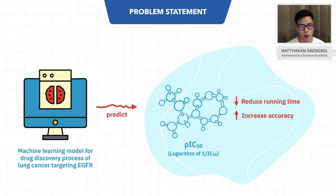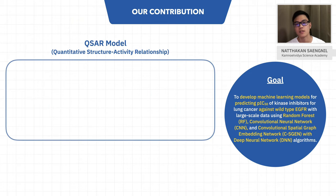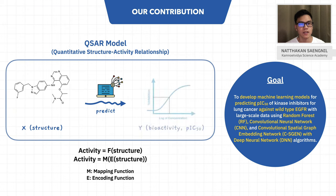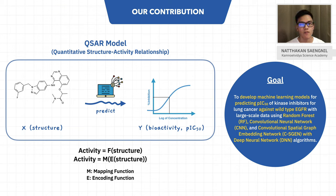PIC50 is the value that indicates the compound's potency in inhibiting a specific target. The principle of machine learning is to train the model with both input and output, and the model will find a relationship between these two. In this case, we use compound structures as input and corresponding PIC50 as output. We have created machine learning models with three algorithms to compare their efficiencies.